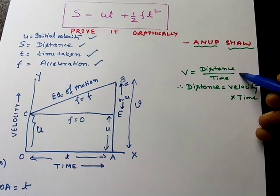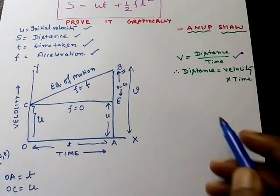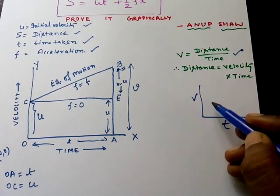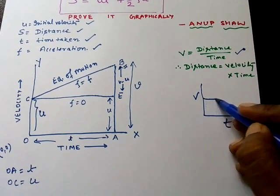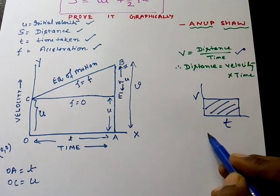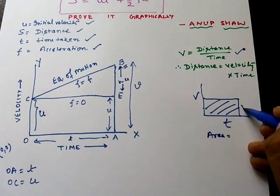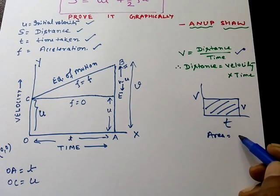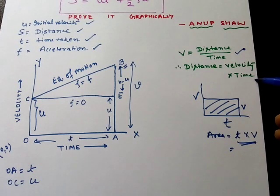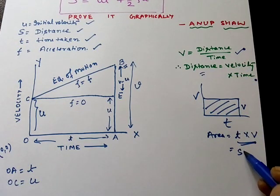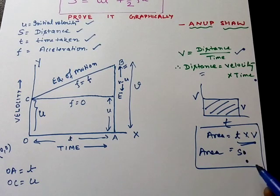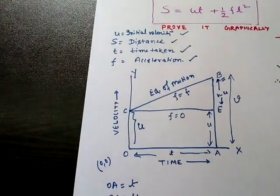We know from earlier classes that velocity equals distance divided by time, so distance equals velocity multiplied by time. In a velocity-time graph, if velocity is on the y-axis and time is on the x-axis, the area of a rectangle equals length times breadth, which is v times t — and that equals the distance s. So area equals distance traveled in a velocity-time graph.